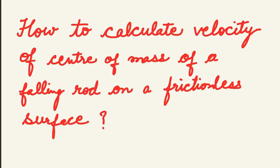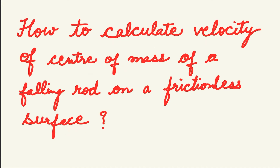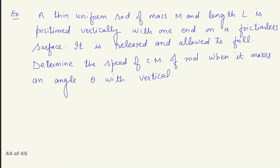Hello dear students, let us discuss an interesting problem of rotation where we want to calculate the velocity of center of mass of a falling rod on a frictionless surface. A thin uniform rod of mass M and length L is positioned vertically with one end on a frictionless surface. It is released and allowed to fall. Determine the speed of center of mass of the rod when it makes an angle theta with the vertical.